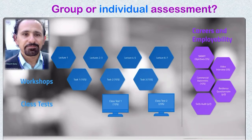Only these three tasks — only tasks 1, 2, and 3 — are group submissions where the whole group needs to submit. Task 1, task 2, and task 3 are each group submissions.